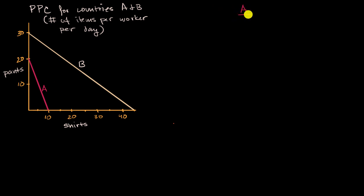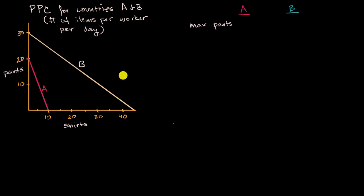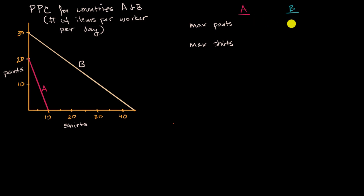This column will be the output for country A, and this column will be the output for country B. We're going to think about the maximum number of pants per worker per day, and then the maximum number of shirts. Pause this video and see if you can fill this out — what are the max pants and shirts in country A and country B?